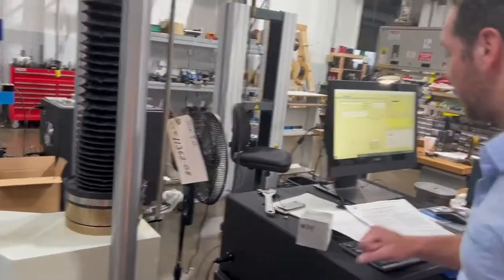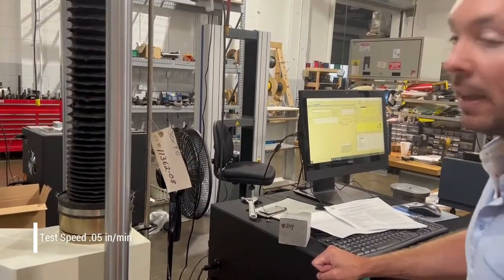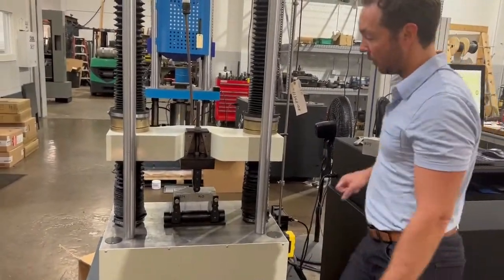Specimen is loaded. Now we're ready to run our test. For this test, we are running at a test speed of 0.05 inches a minute. So it's very slow, and we're taking this all the way till failure, which is usually a low drop-off, and we should see a crack in the specimen.